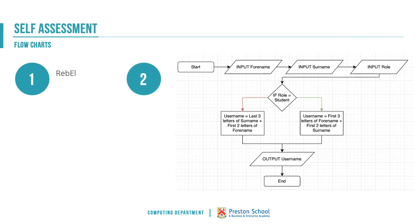Number one: Reb L. For number two, you'll get a mark or two for the different inputs — always put your inputs in place, as you'll still get marks just for putting the three inputs. You need some sort of check whether the role is a student or a teacher, signified yes and no. Then create the username with a couple of process blocks, output the username, and put your terminator at the start and the end.